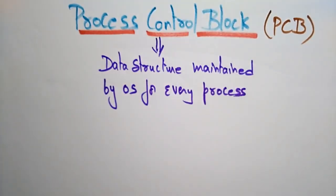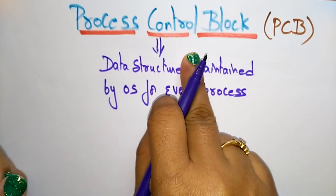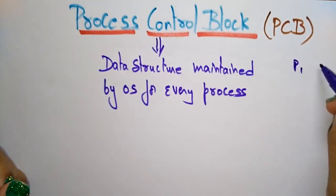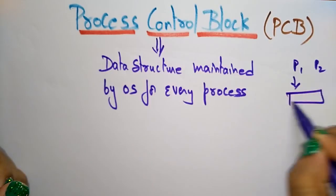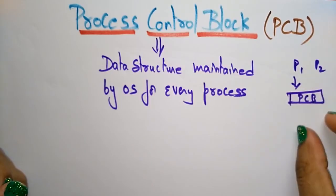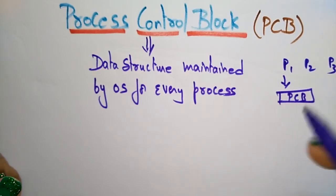A program when it is executing in main memory becomes a process. A process is divided into four divisions: the stack, heap, text, and data. Whatever process you are taking, a single process is maintained in one Process Control Block. If different processes are coming — P1, P2, P3 — each will be maintained in its own Process Control Block.